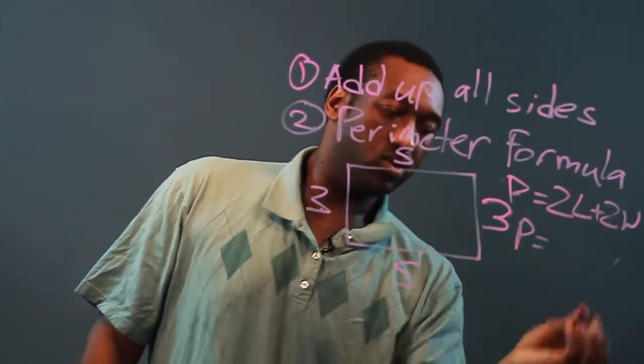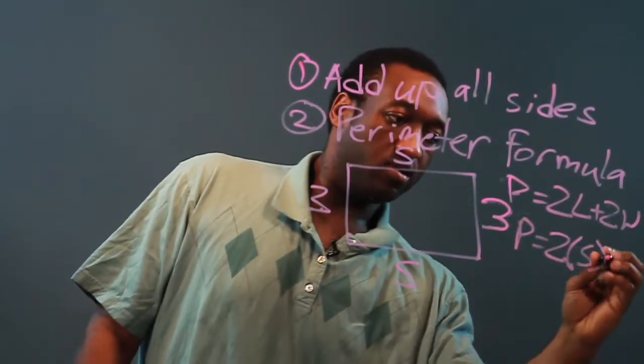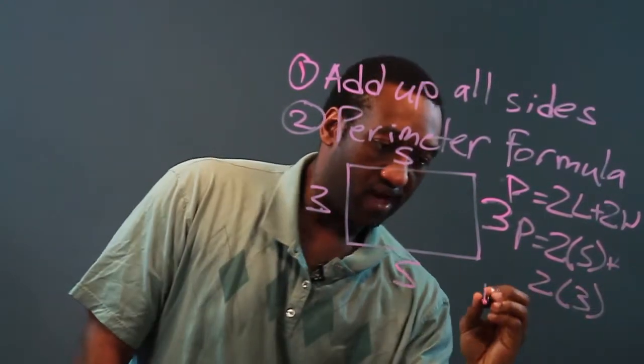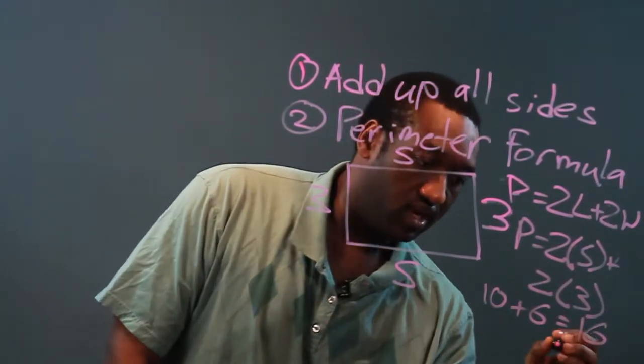So, in this case, we would say two times five plus two times three. Two times five is ten. Two times three is six. And ten plus six is sixteen units.